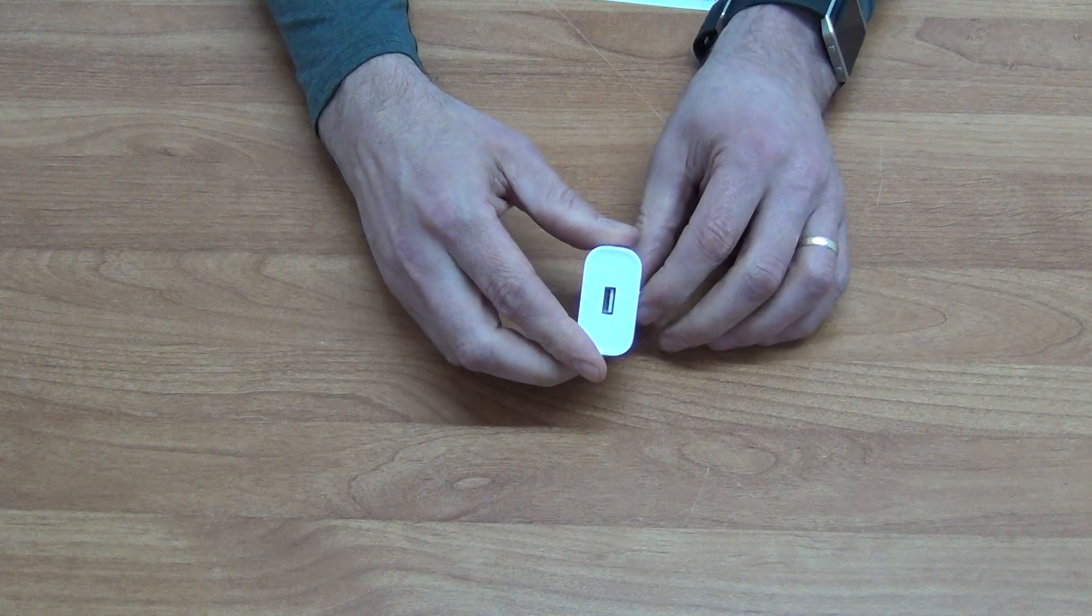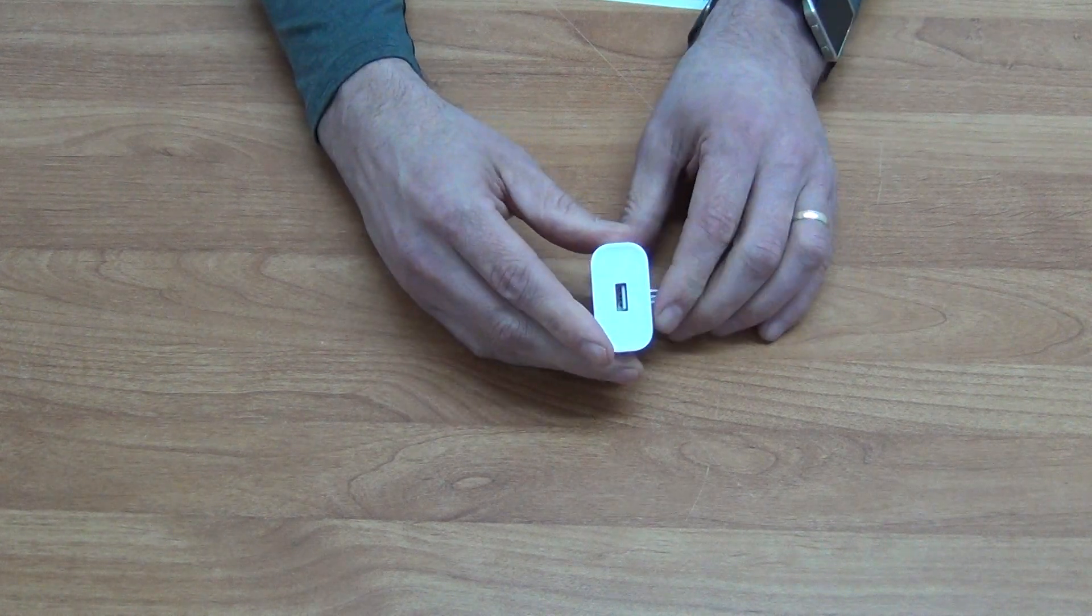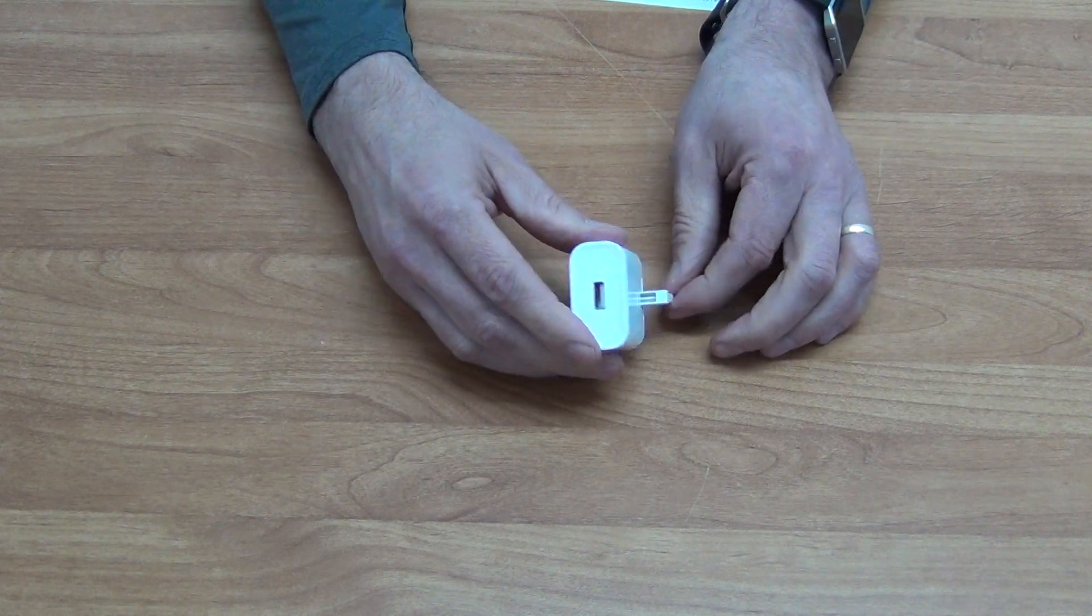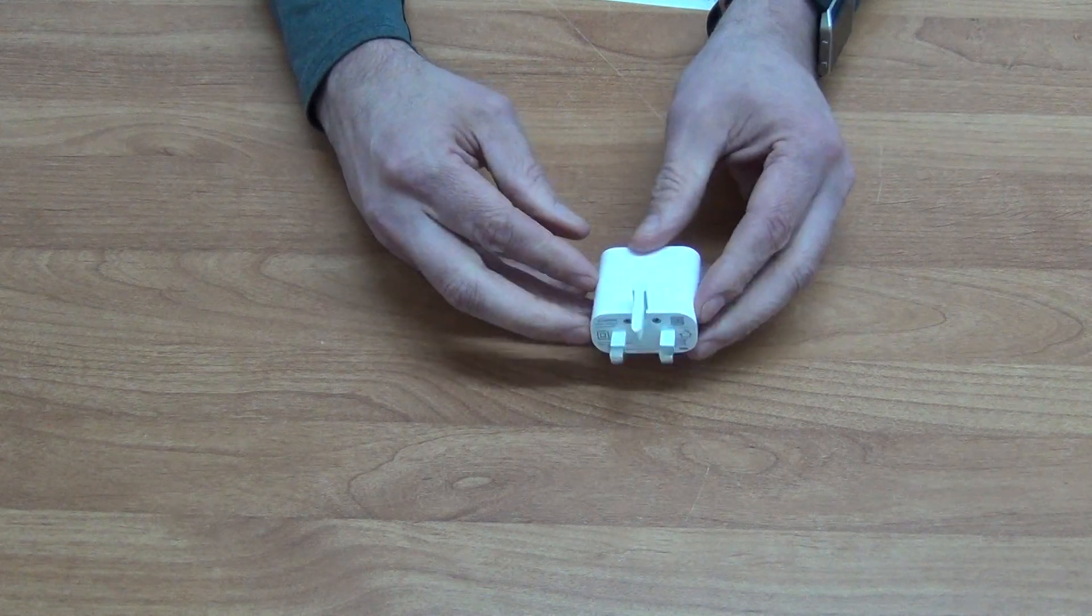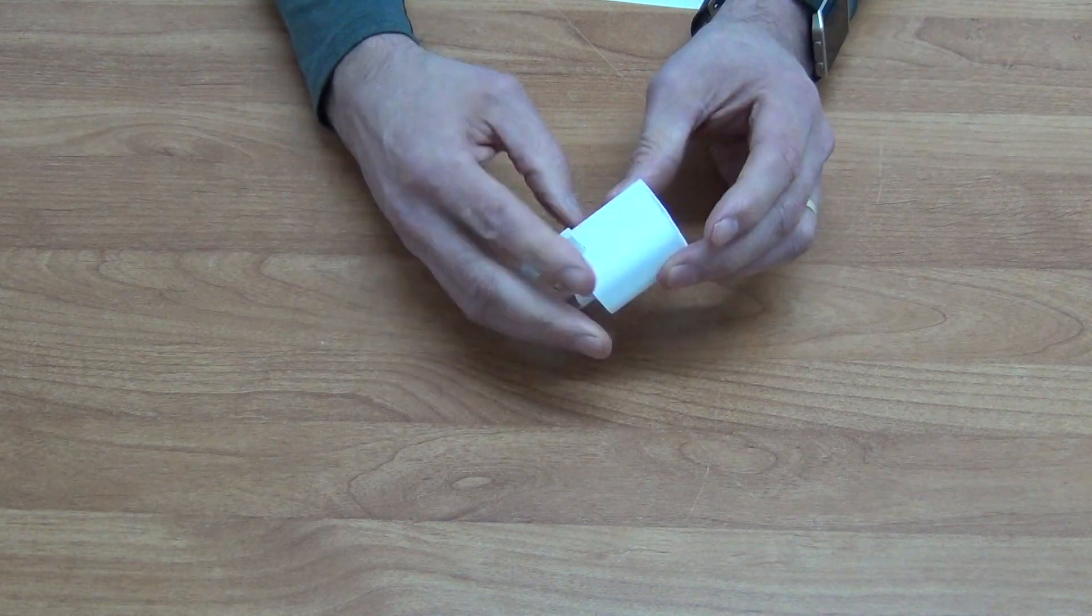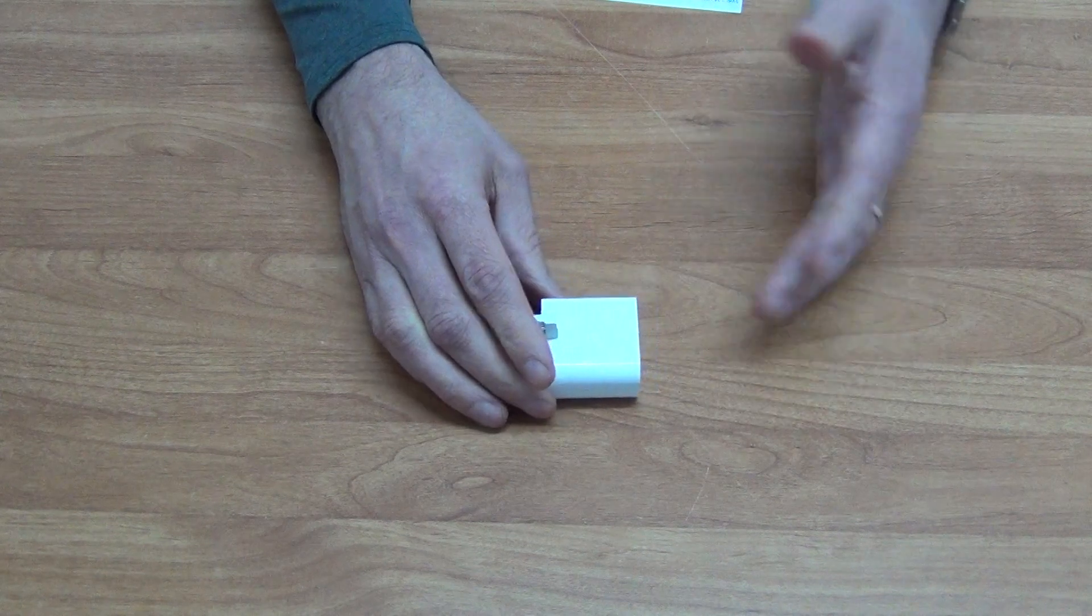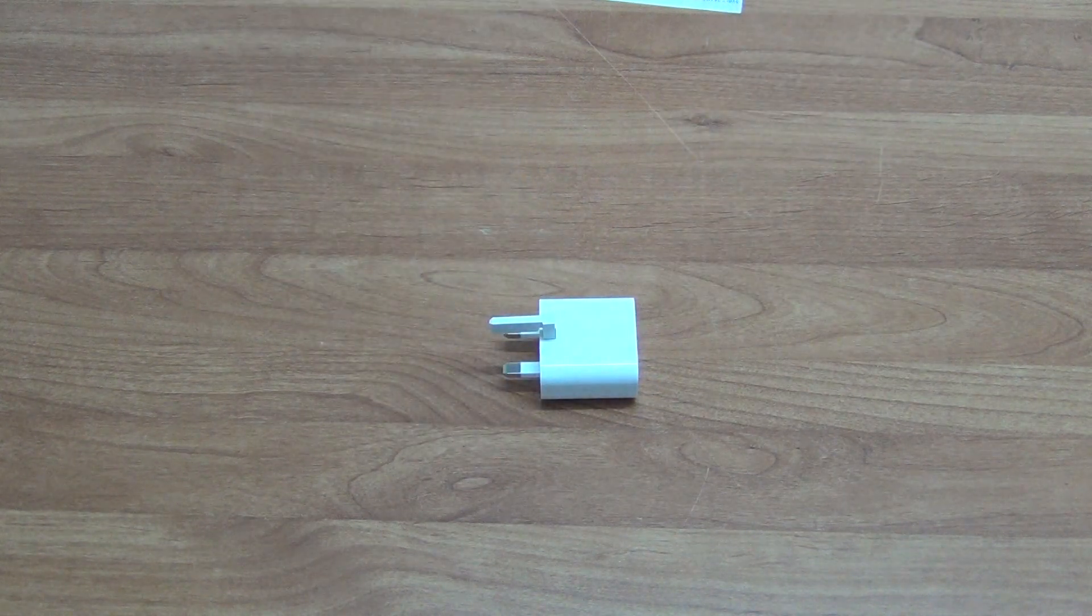If we just rotate it over, we'll see the output on the back, so we have our USB port there. Obviously you could use this for Android or Apple products for charging directly, so you'll almost invariably be using this with phones or possibly tablets.